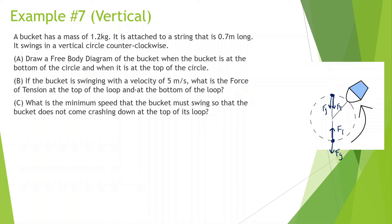Let's look at these other problems. If the bucket is swinging with a velocity of 5 meters per second, what is the force of tension at the top of the loop and at the bottom of the loop? This is pretty interesting because even though it might be going with a constant velocity at 5 meters per second, there's still an acceleration because it's moving in a circle, meaning it's constantly changing direction.